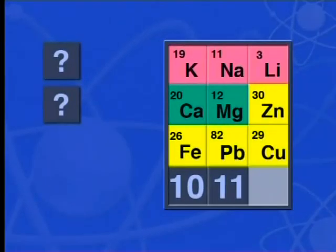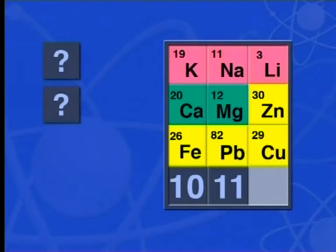What do the results of our experiments today tell us about the reactivity series? We have confirmed that zinc is the most reactive of the transition metals we've used in experiments in this series. We also know that lead is more reactive than copper, but less reactive than iron. So our completed reactivity series so far looks like this: potassium, sodium, lithium, calcium, magnesium, zinc, iron, lead, and copper.